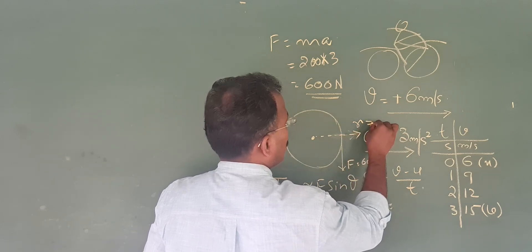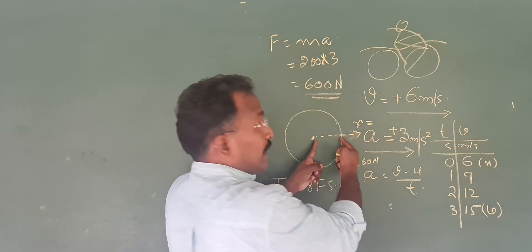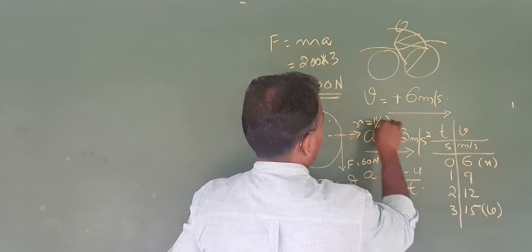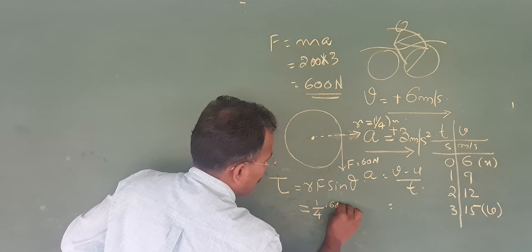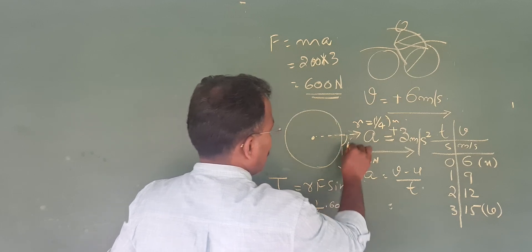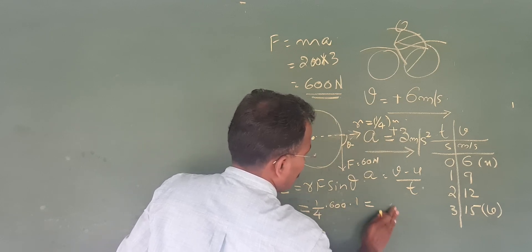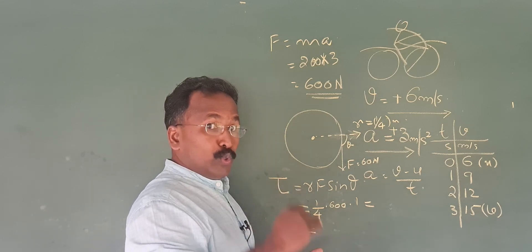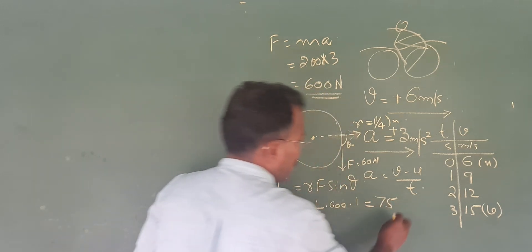This is τ = rF sinθ. This force is about 20 cm — that is not a meter, it is 1/4 of a meter. Then: 1/4 into force 600 into sinθ. This angle θ is 90 degrees, and sin 90° is 1. So the torque equals 150. The unit is newton meters.